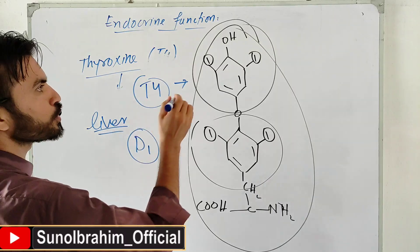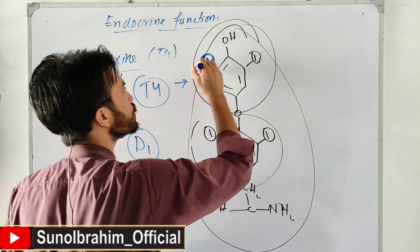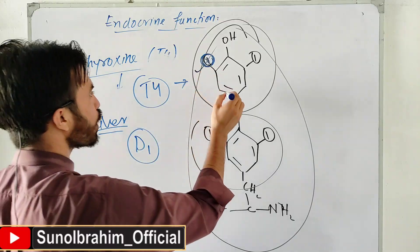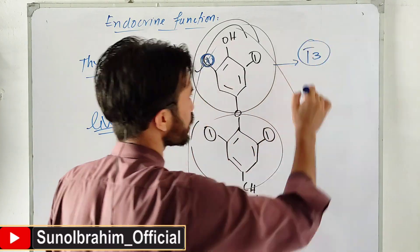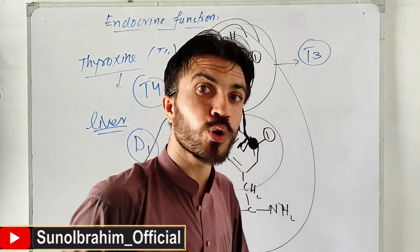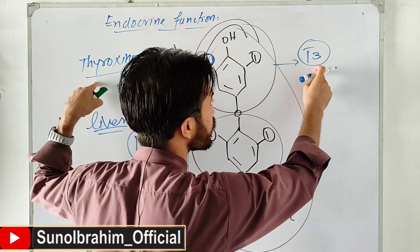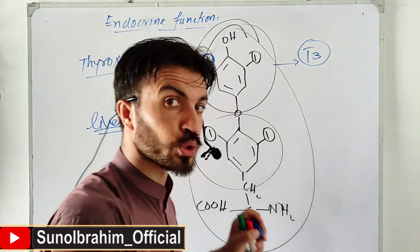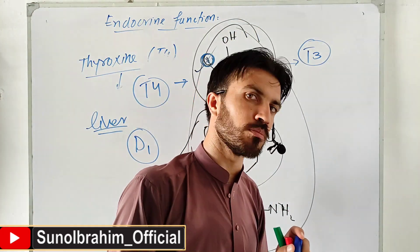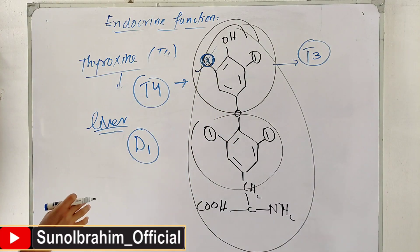D1 deiodinase removes one iodine from T4. The remaining molecule - with three iodines - becomes T3 (Triiodothyronine), which is the active form. When this outer ring iodine is removed, T3 becomes active and starts doing its work - controlling metabolism, maintaining heart rate, and other functions.